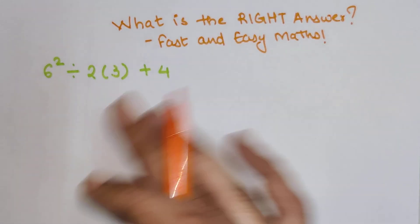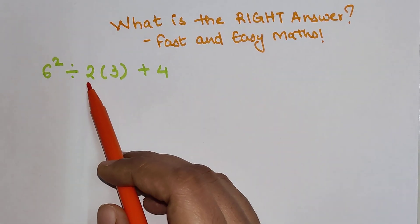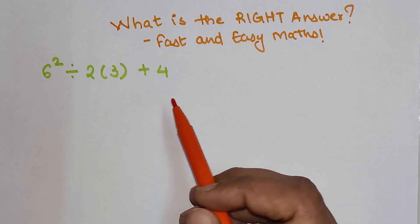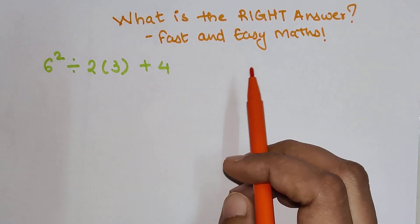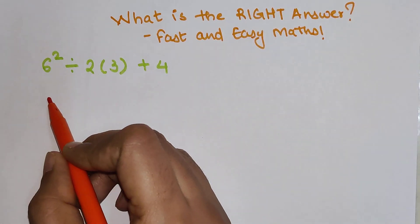So students, today we are going to solve a question which was very viral recently. The question is 6 squared divided by 2, then there is a bracket where there is a 3 plus 4, and we need to find the correct answer.